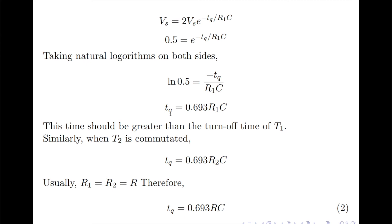It must be noted that this circuit turnoff time TQ should be greater than the device turnoff time of thyristor T1. Similarly, when commutating thyristor T2, the expression for TQ becomes 0.693 × R2 × C. Since for complementary commutation we keep R1 = R2 = R, the overall equation for the circuit turnoff time is TQ = 0.693 × R × C. That concludes the discussion on the complementary commutation technique. Thank you.